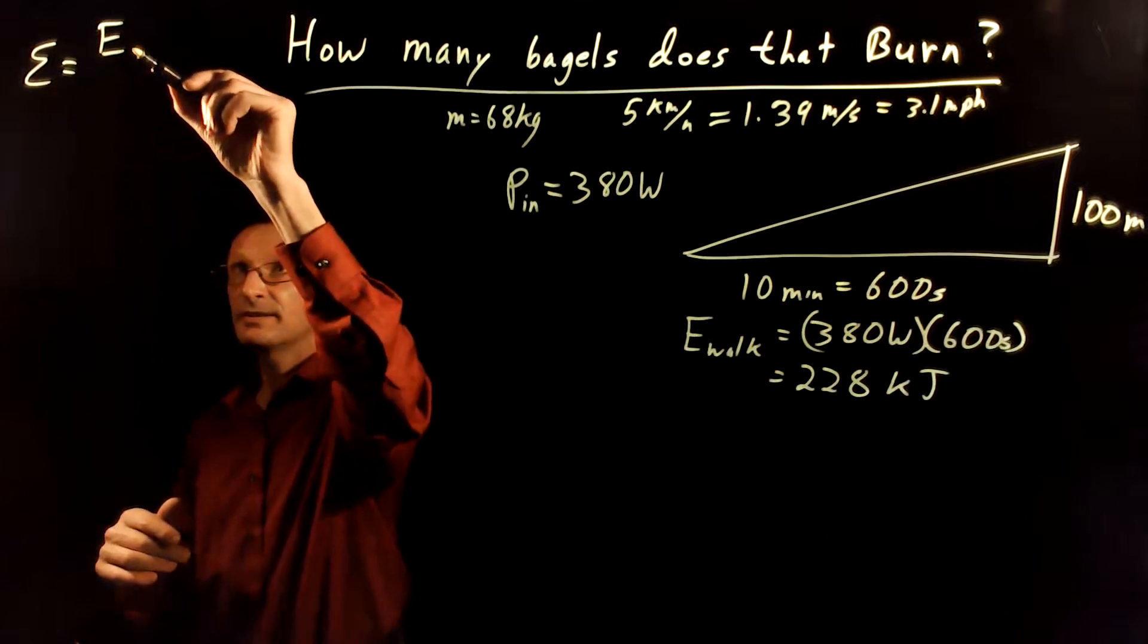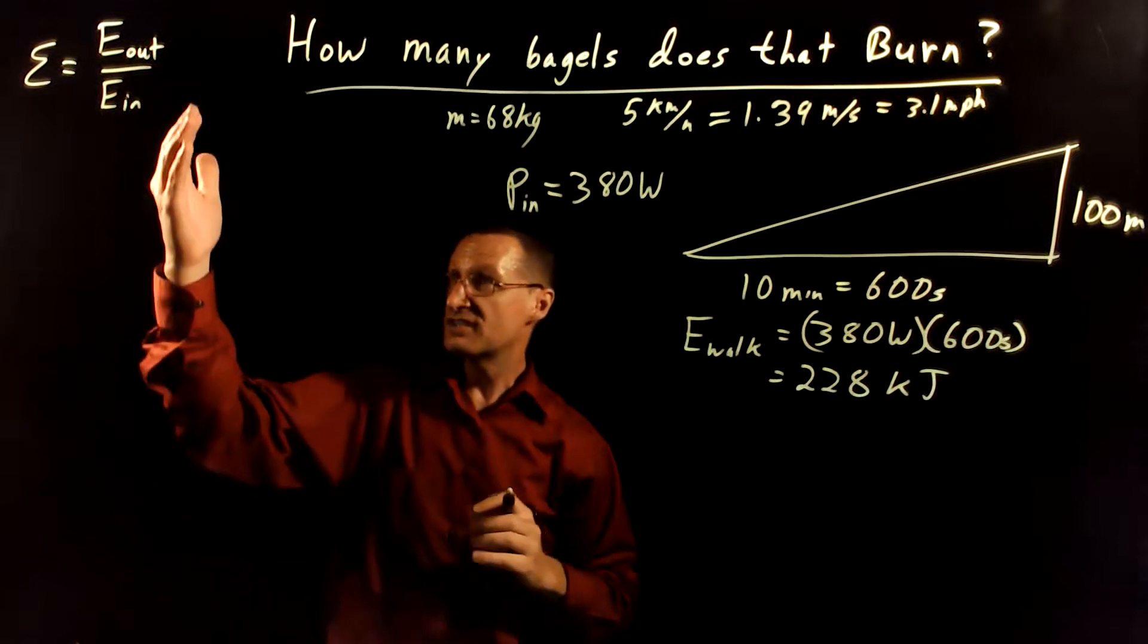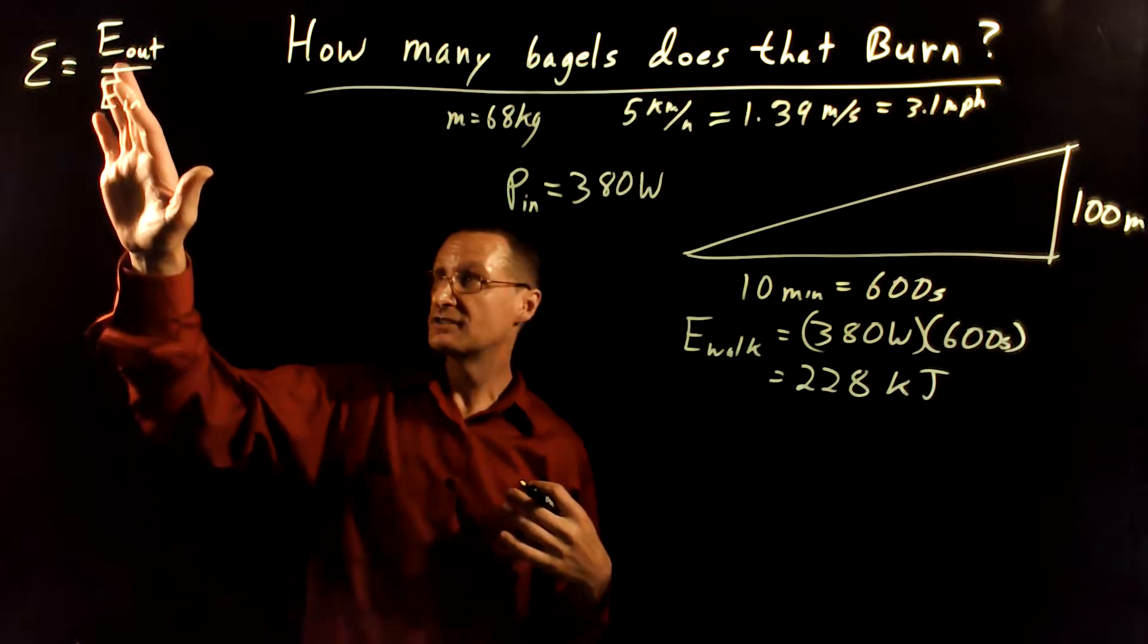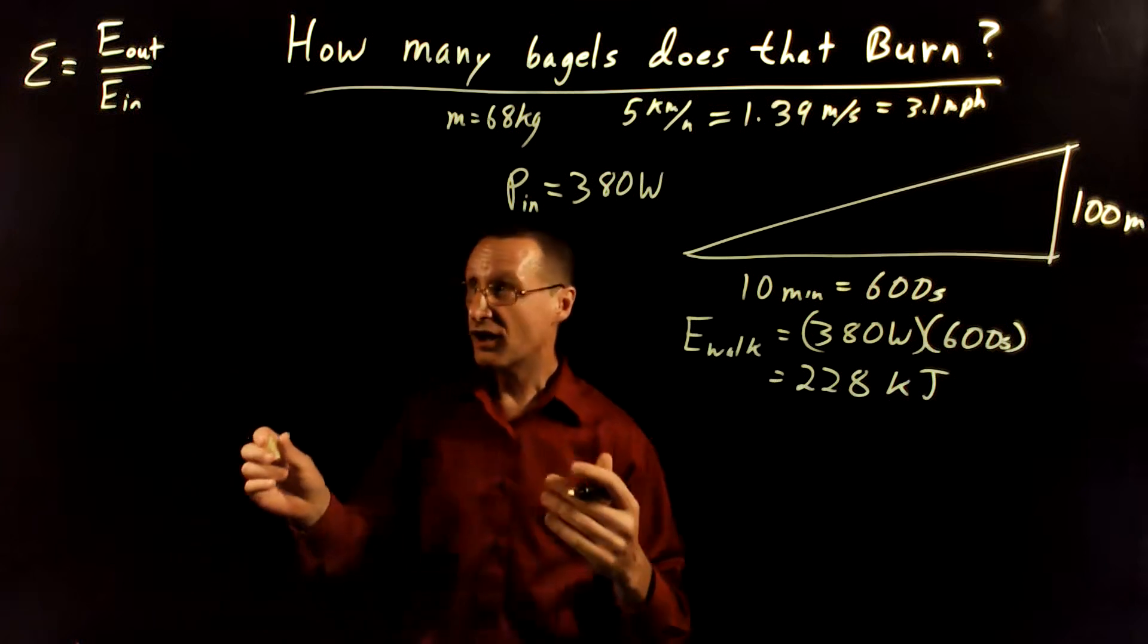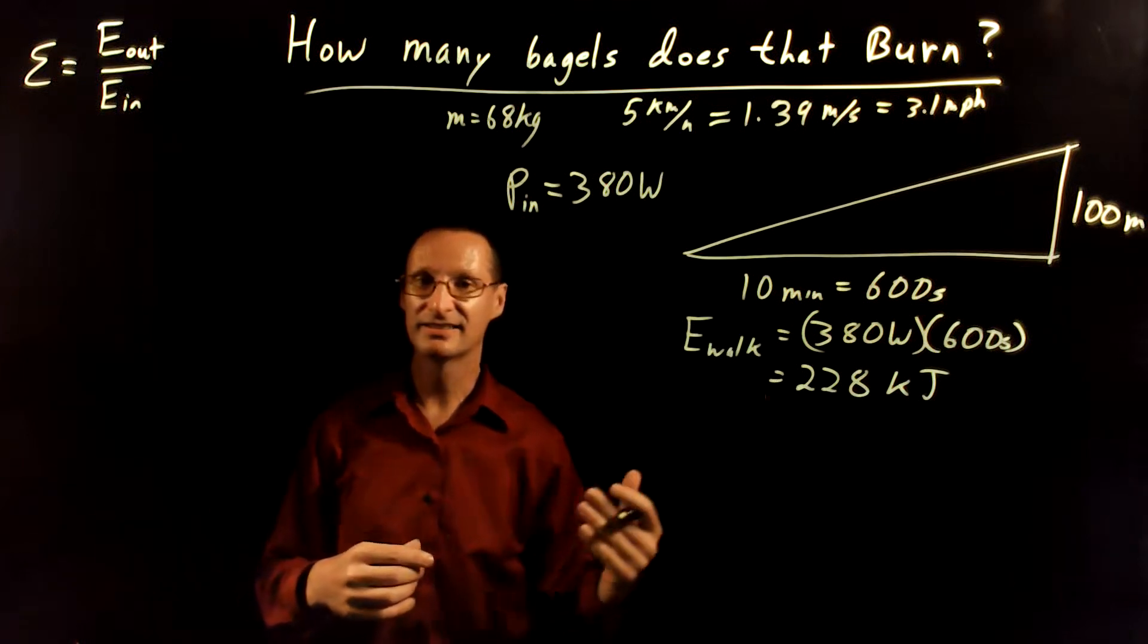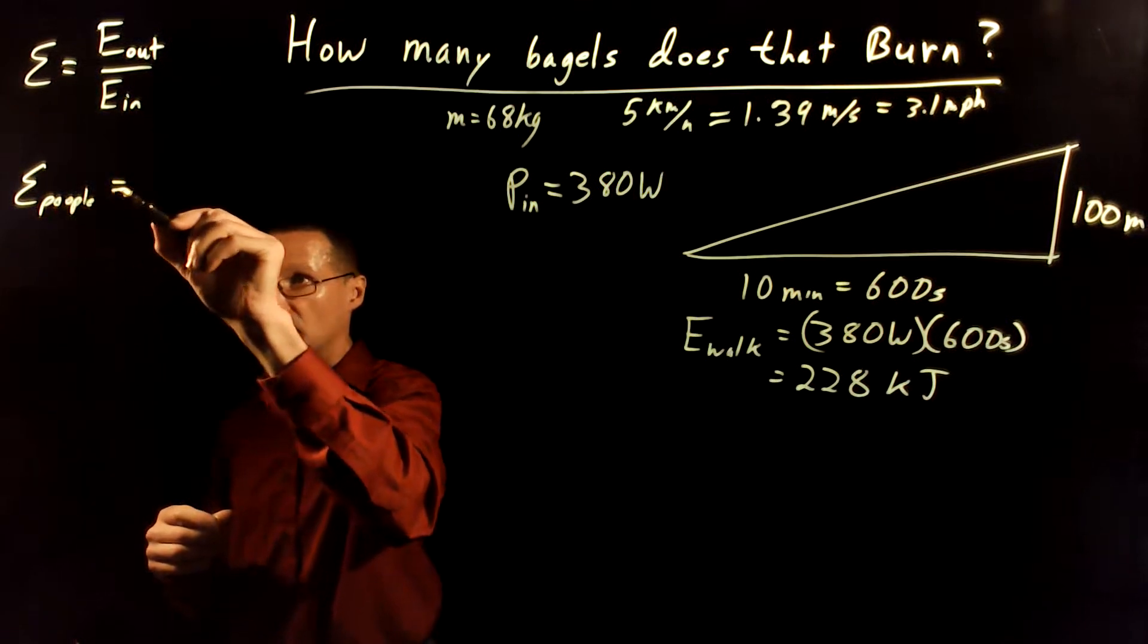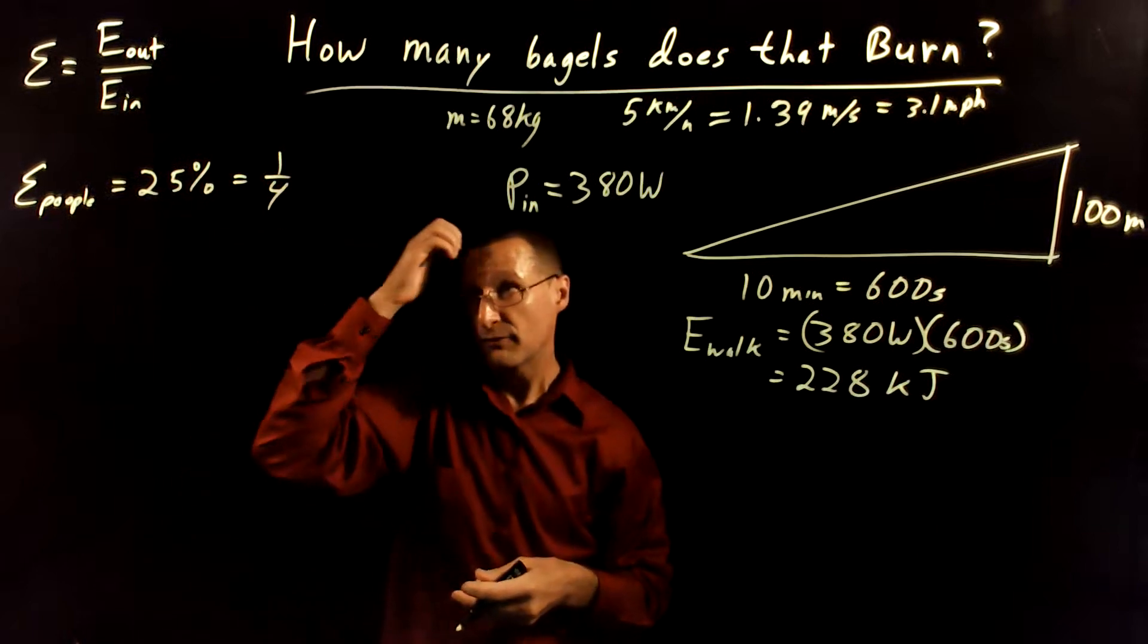Efficiency is just the energy output divided by the energy input. Now, in general, well, not just in general, always, energy output is going to be less than energy input. There's always going to be some kind of losses that are going to occur. And so because of that, this number is always going to be less than 1 or less than 100%. For cars, this number is about 10% to 35% for the highest, most fuel-efficient hybrid vehicles. Our bodies, for people, this number is about 25% on average or about one quarter.